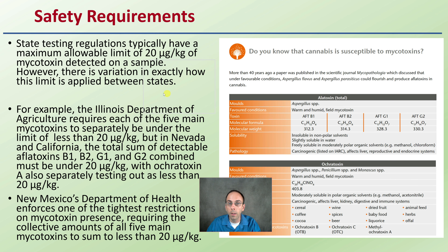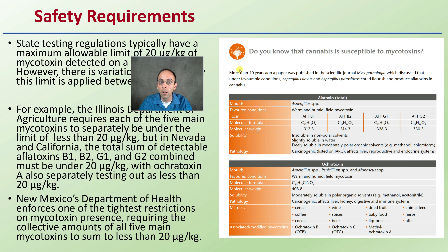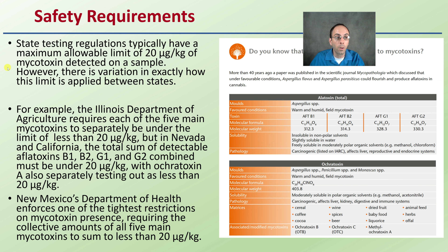Regarding safety requirements: cannabis is susceptible to mycotoxins, and more than 40 years ago a paper was published discussing unfavorable conditions that produce aflatoxins within cannabis. State testing regulations typically have a maximum allowable limit of mycotoxin detection on the sample; however, there is variation in exactly how the limit is applied between states. For example, Illinois' Department of Agriculture requires each of the five main mycotoxins to separately be under the limit of less than 20 micrograms per kilogram. But in Nevada and California, the total sum of detectable aflatoxins B1, B2, G1, and G2 combined must be under that limit. Some states look at individual mycotoxins; others look at the sum total.